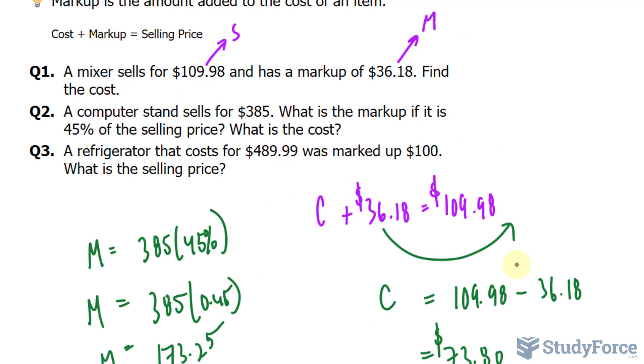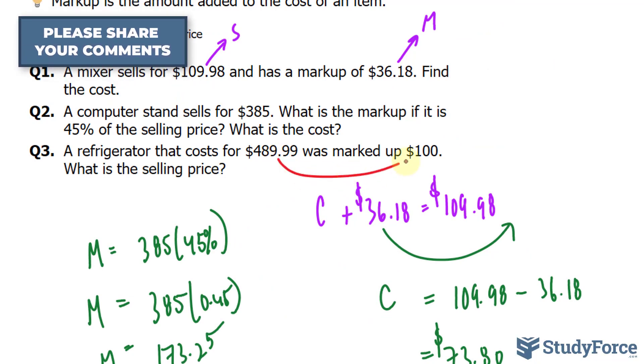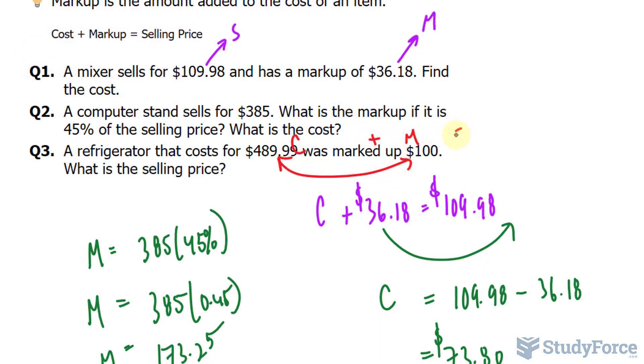Last question. A refrigerator cost $489.99 and was marked up by $100. You simply add these two numbers together. C plus M, and you get $589.99.